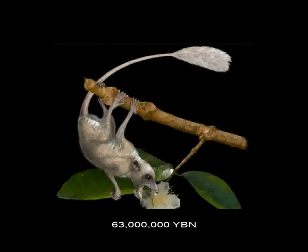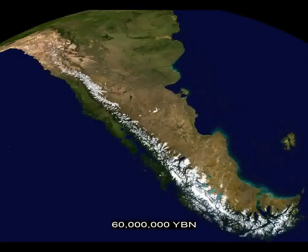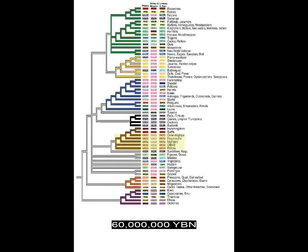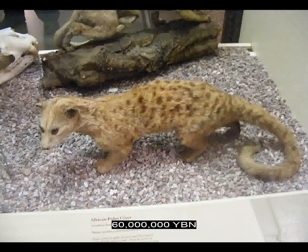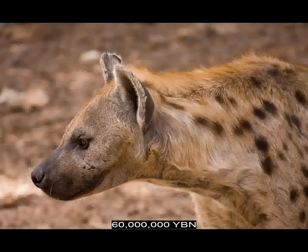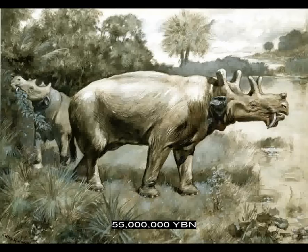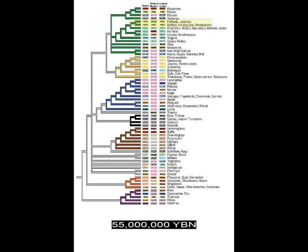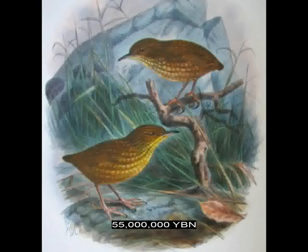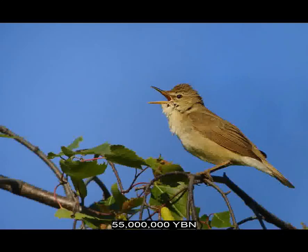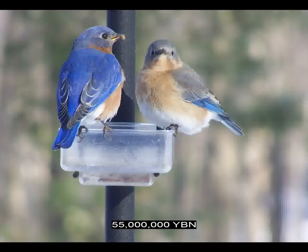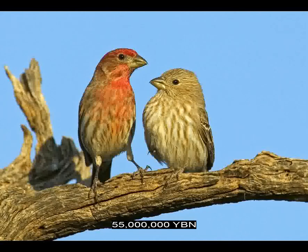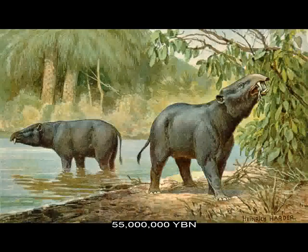The birds Gruiformes evolve — ancestor of cranes, rails, and bustards. Marsupial moles evolve. The marsupials Tasmanian devil and numbat evolve. The marsupials Diprotodontia evolve — ancestor of wombats, kangaroos, possums, and koalas. The primates evolve — with the opposable thumb. The order Primates contains more than 300 species, including monkeys, apes, and humans. The Andes mountains start to form. The birds Strigiformes evolve — owls. The Laurasiatheria Carnivora evolve — the ancestor of cats, dogs, bears, weasels, hyenas, seals, and walruses. The birds Apodiformes evolve — hummingbirds and swifts. The birds Piciformes evolve — woodpeckers and toucans. The birds Passeriformes evolve — perching songbirds — including crows, jays, sparrows, warblers, mockingbirds, wrens, robins, orioles, bluebirds, larks, swallows, and finches. More than half of all species of birds are passerines.